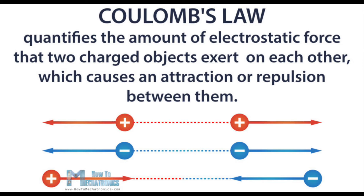The symbols q1 and q2 in the Coulomb's Law equation represent the quantities of charge on the two interacting objects. Since an object can be charged positively or negatively, these quantities are often expressed as plus or minus values. The sign on the charge represents whether the object has an excess of electrons or a shortage of electrons.